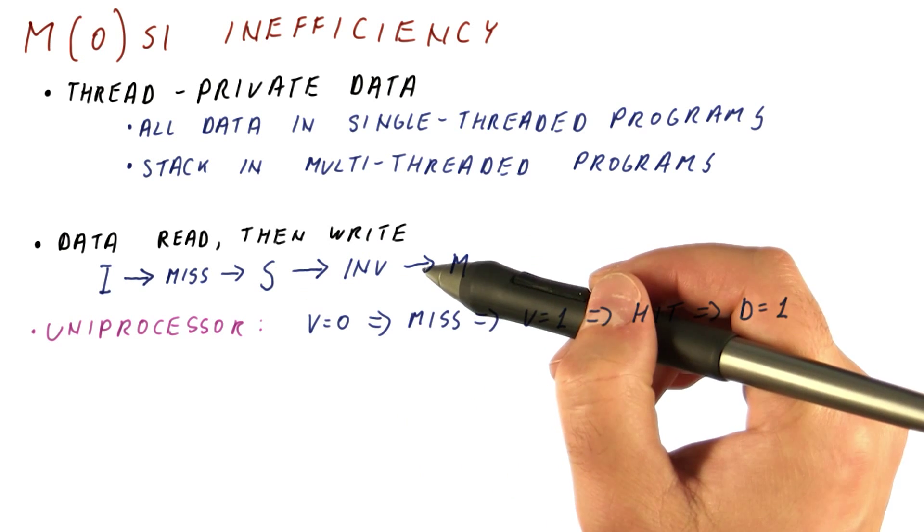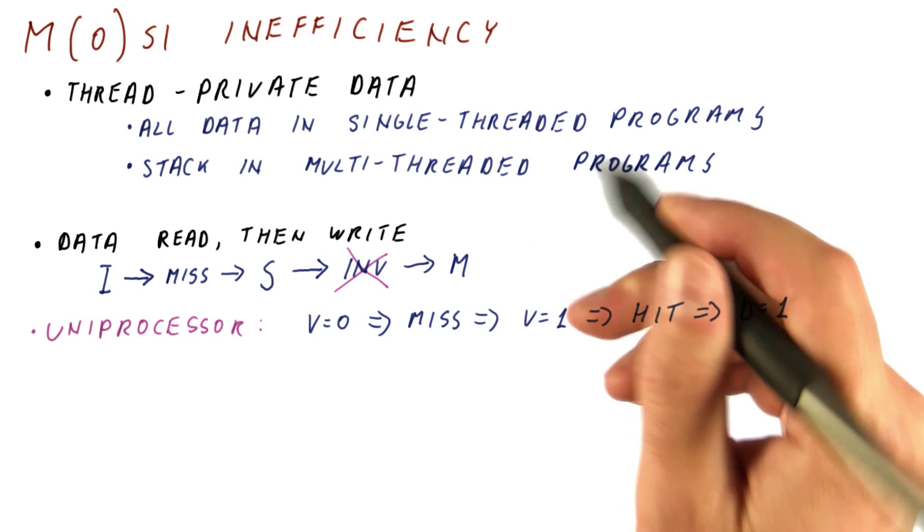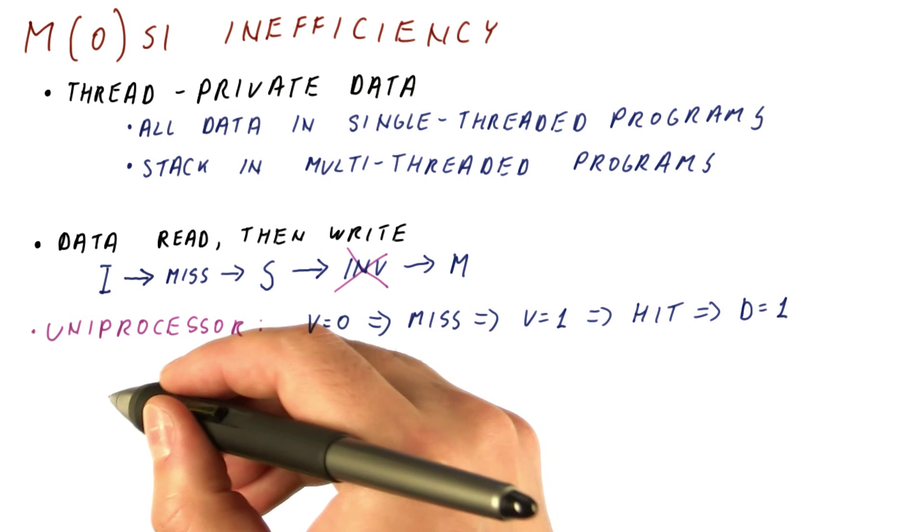So what we want to do is avoid this invalidation. To do that, we introduce a new state called exclusive.